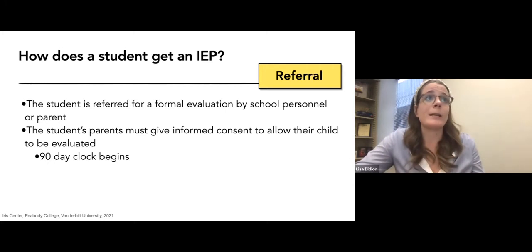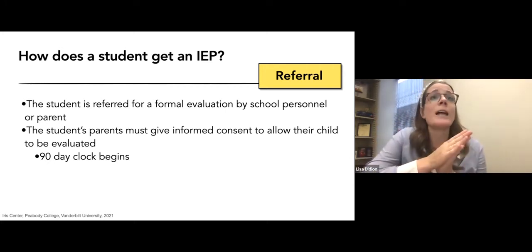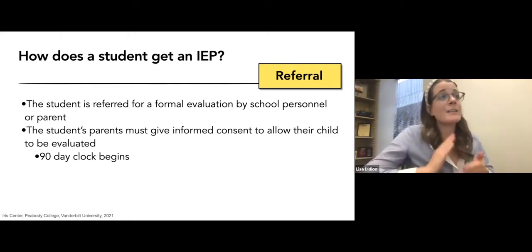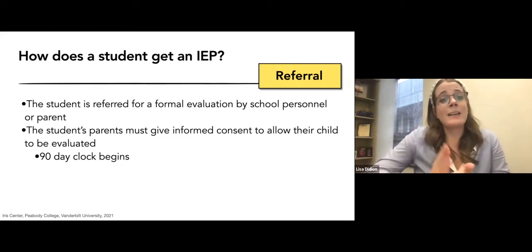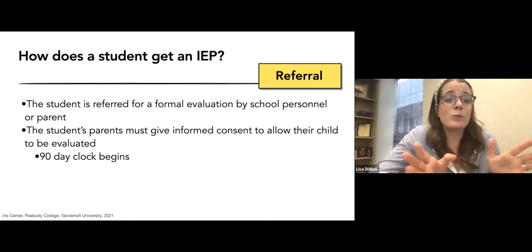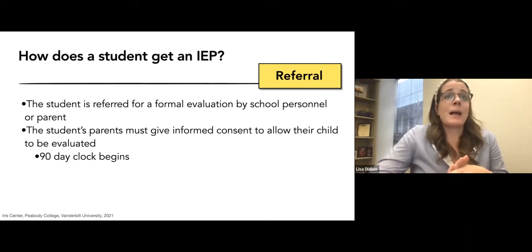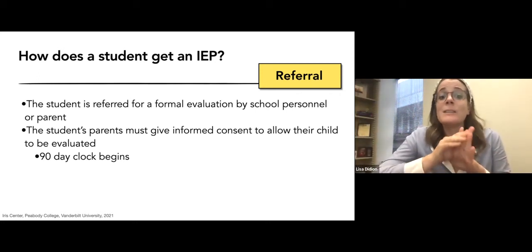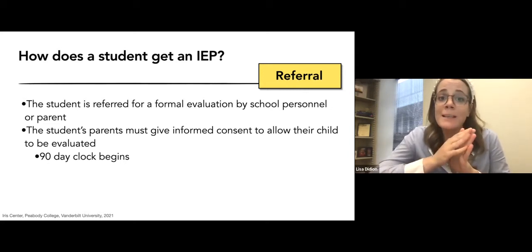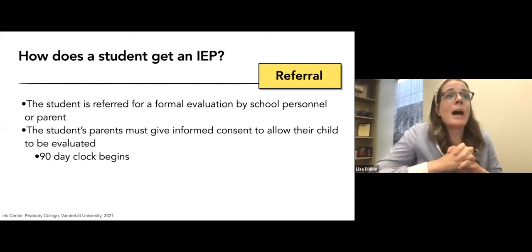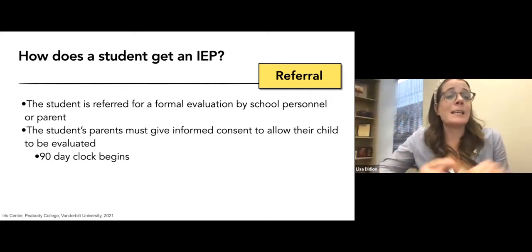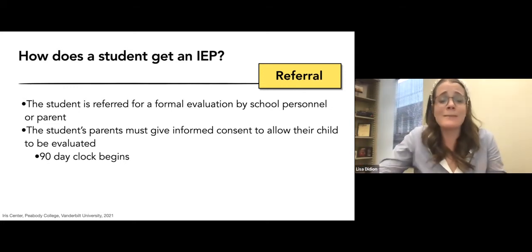Now you're in the IEP process. A referral can be made by the teacher, but it can also be started if a parent says Johnny's having a lot of trouble and they would like him evaluated for special education. As soon as a parent makes that request, it starts a 90-day clock from the time the referral is put in — whether by a parent, an administrator, or the gym teacher. You have 90 calendar days — not 90 school days — to evaluate and fully develop an IEP. That's three months to do a whole lot of work.